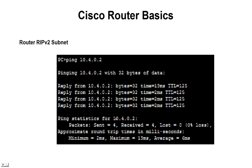Now if we go ahead and ping from our first PC — PC0 — to PC4, whose IP address is 10.4.0.2 on that fourth network, we get our returns. So the network is working.